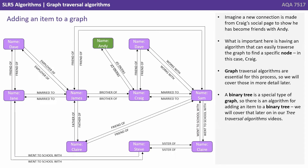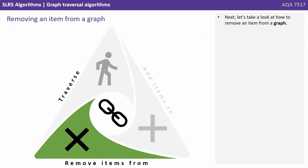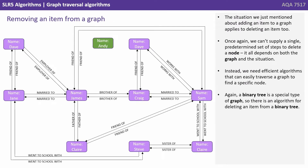A binary tree is a special type of graph, so there is an algorithm for adding an item to a binary tree. We'll cover these later in our tree traversal algorithm videos. Next, let's take a look at how to remove an item from a graph. The situation we just mentioned about adding an item to a graph applies to deleting an item as well. Once again, we can't supply a single predetermined set of steps to delete a node — it all depends on both the graph and the situation. Instead, we need efficient algorithms that can easily traverse a graph in order to find a specific node. Again, a binary tree is a special type of graph, so there is an algorithm for deleting an item from a binary tree, and we'll look at that in later videos.